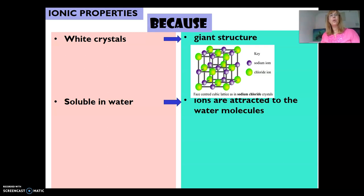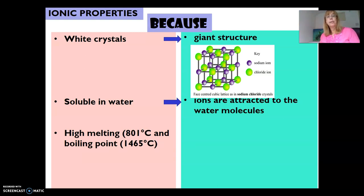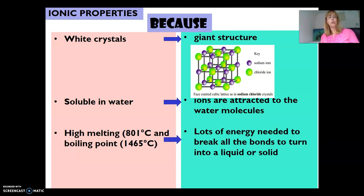Why do ionic substances have a high melting and boiling point? Because it's a giant structure and we need a huge amount of energy to break those very strong bonds to turn it from a solid to a liquid to a gas.